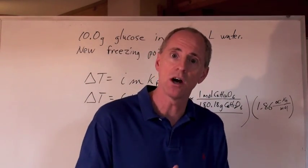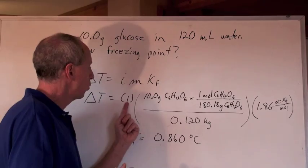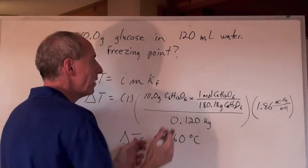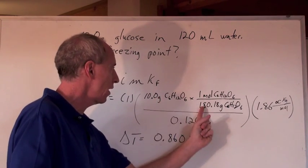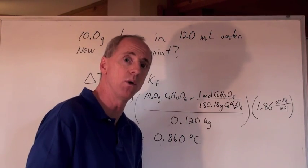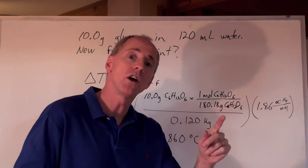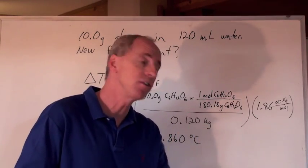So, it's 1 times, what's the molality? Molality is moles of solute. There's the calculation for moles of solute. Taking the mass and dividing by the molar mass of glucose, that's the moles. Moles of solute divided by kilograms of the solvent.